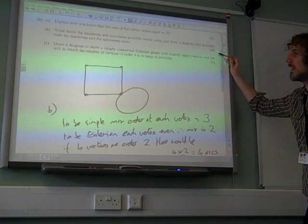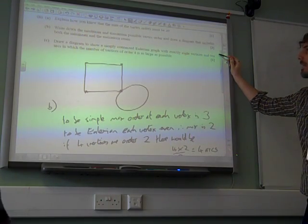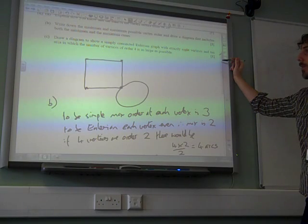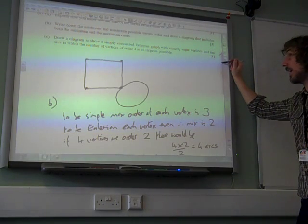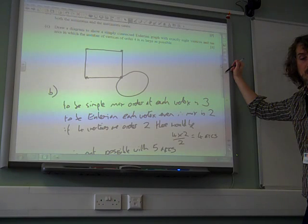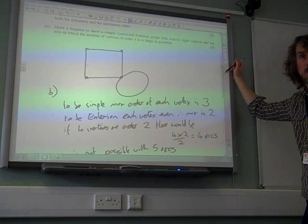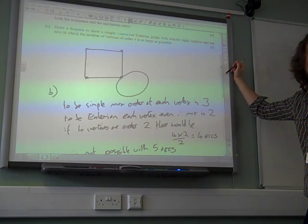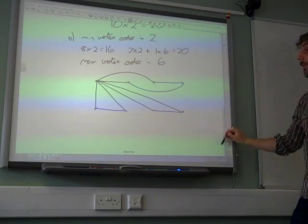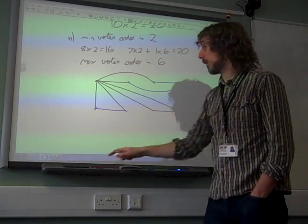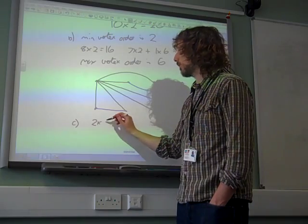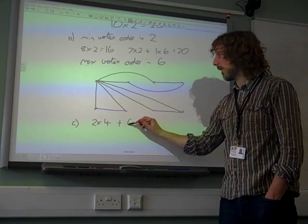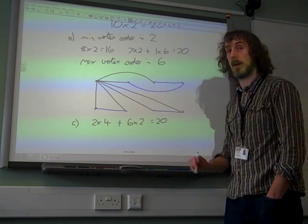And then it said, draw a diagram to show a simply connected graph with exactly eight vertices and ten arcs in which the number of vertices of order four is as large as possible. Well, that means we need to have, the most we can manage is two of order four, isn't it? Remember, we need to add up to our number of twenty. So if it's two of order four, as we do part c, two of order four, that would leave us with the remaining six as being of order two, and that does give us twenty, doesn't it?